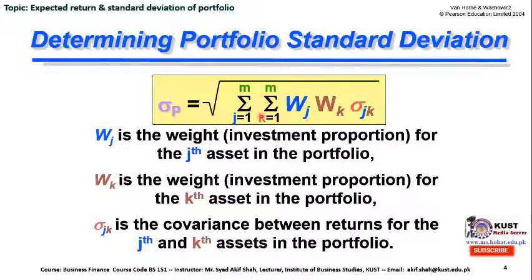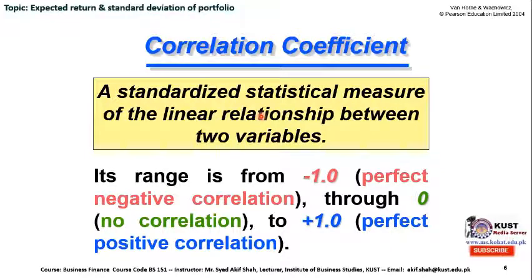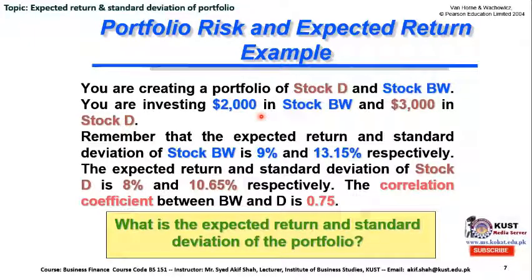The double summation sign represents summing across all rows and columns — all elements within a square matrix, which we will discuss shortly. We also discussed covariance and its importance for portfolio construction: the portfolio manager is interested in selecting stocks that are not perfectly positively correlated, meaning the covariance between the two stocks is not perfectly positive.